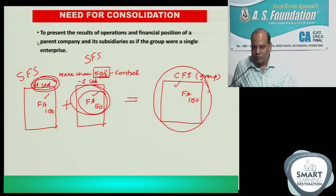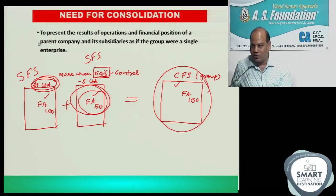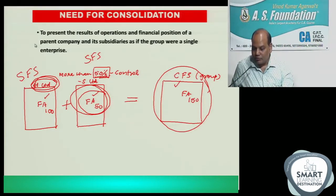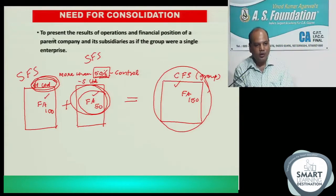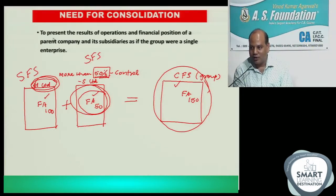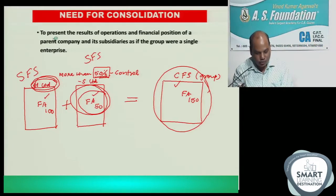As a group, what is your net asset, what is your revenue, what is your profit - that we get to know only if we look at the CFS, not at the separate financial statement. We will call the separate financial statement SFS and the consolidated financial statement CFS. The investor is interested in understanding as a group how much the company is earning and what is their net worth. Also now because of the requirement of the law, the Companies Act says you have to prepare CFS.